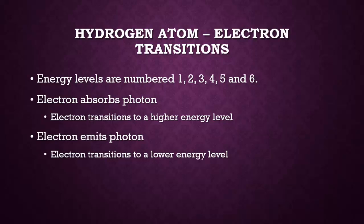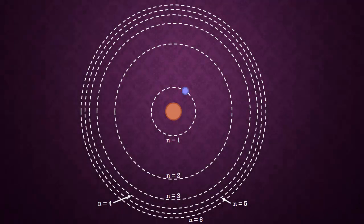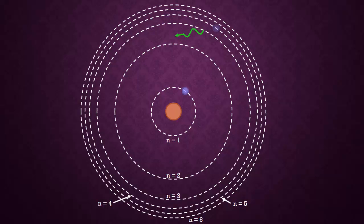Let's take a look at an example. This is a representation of the hydrogen atom with the electron in the energy level n equals 1. If it absorbs a photon, it will transition to a higher energy level. At this point, it could absorb another photon and go to some higher energy level. Eventually, it will emit this energy as a photon and return to n equals 1.